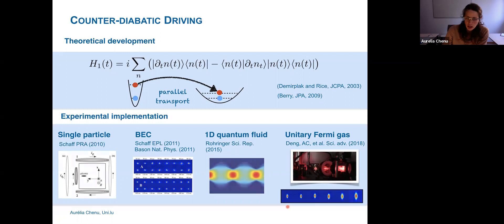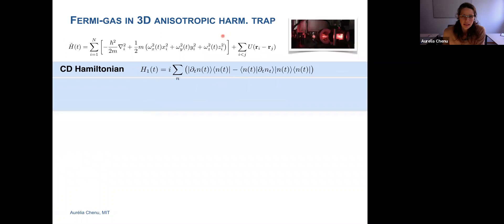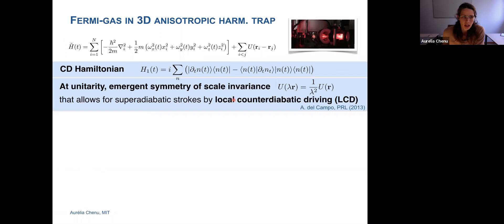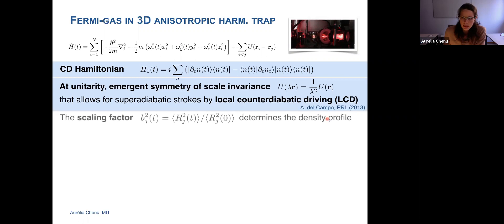We chose the unitary Fermi gas because it has the great advantage of being scale invariant. At unitarity, the Fermi gas has a symmetry of scaling invariance, which means the interaction potential between particles scales with a scaling factor. For this kind of system, a shortcut can be found systematically via local counter-diabatic driving. Basically all you need to know is the scaling factor — if you can measure your cloud of atoms at time zero and at time t, you obtain the scaling factor from which you can define the entire trajectory to implement the control.